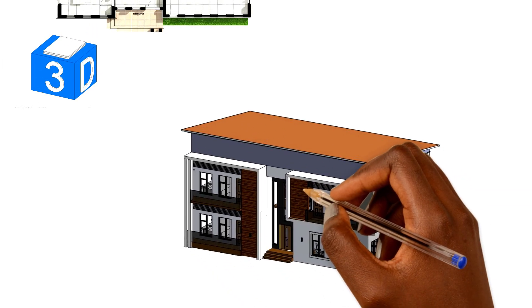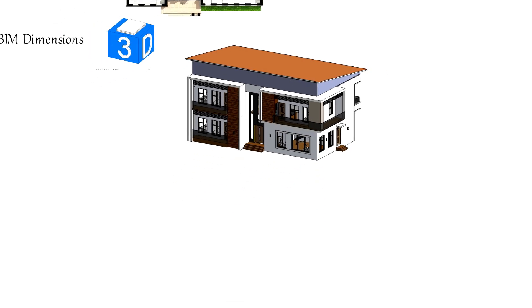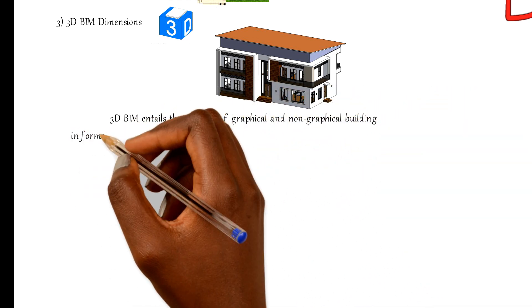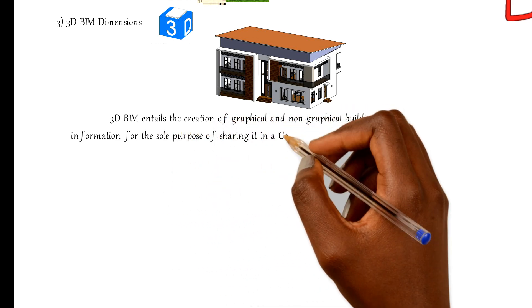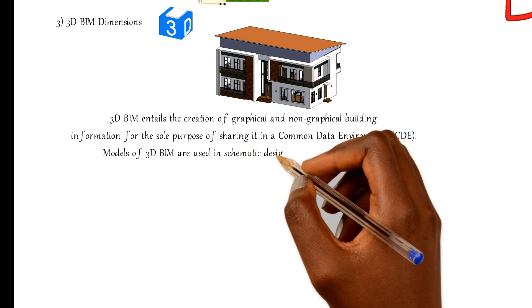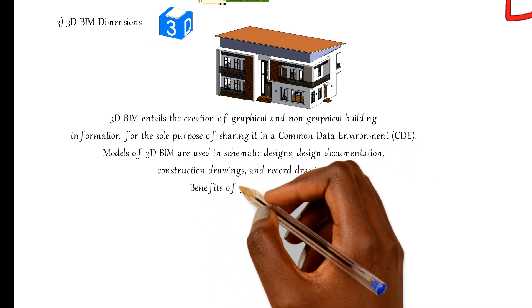Number three: 3D BIM dimensions. 3D BIM is arguably the most popular BIM dimension that the architectural, engineering, and construction industry is familiar with. At this stage, a coordinated building model is developed. 3D represents the three-dimensional structures of a building — the x-axis, y-axis, and z-axis. 3D BIM entails the creation of graphical and non-graphical building information for sharing in a common data environment, and is used in schematic designs, design documentation, construction drawings, and record drawings.